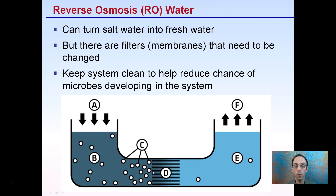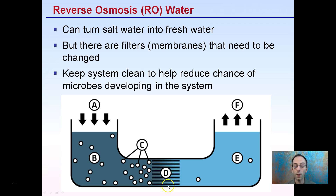You also want to keep the system clean to help reduce the chance of microbes developing — they can develop on the membranes and need to be changed regularly anyway. Make sure you're not allowing algae growth on them by placing them in a sunny location. Take extra measures to keep them as clean as possible so they last as long as possible and you can produce quality RO water for your grow operation.